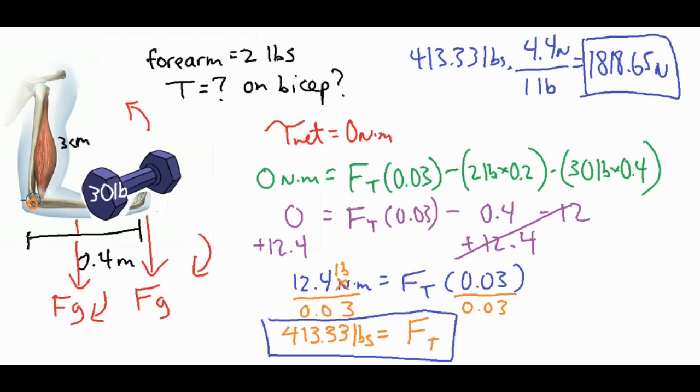So we could have either converted those pounds into newtons in the beginning, and then we would have just gotten this answer in newtons at the end. I chose to leave it in pounds so that we can take a look at the force of tension in pounds first, and then go ahead and convert that into newtons later on. So I hope that was helpful in helping you analyze a bicep curl problem and solve for the force of tension. Thank you for watching and listening.